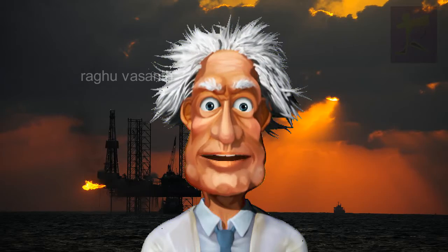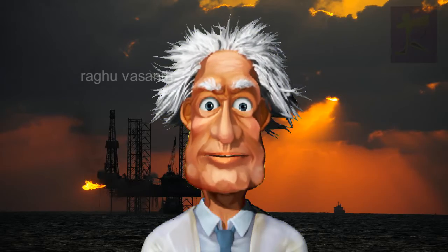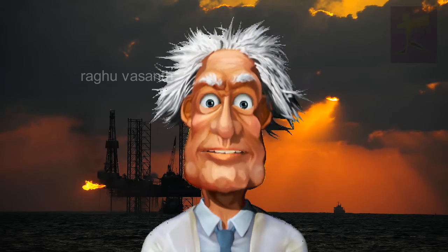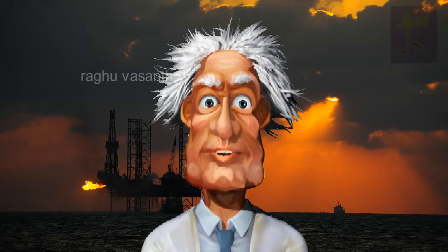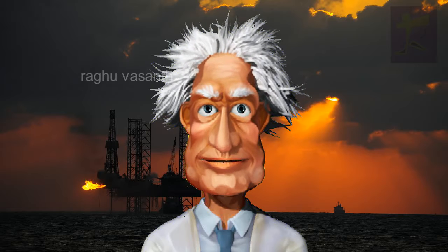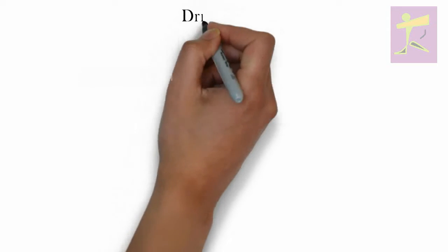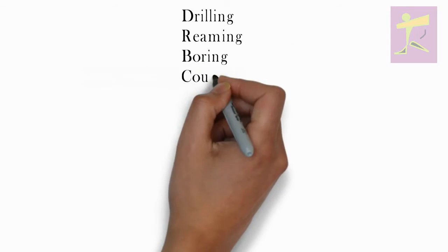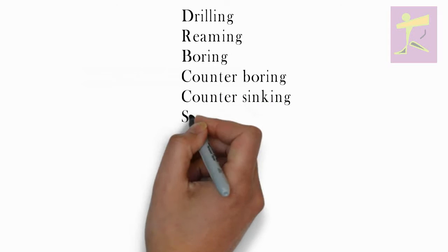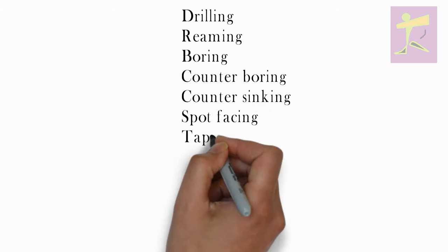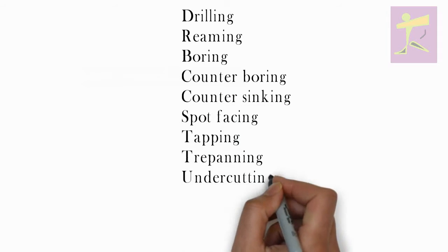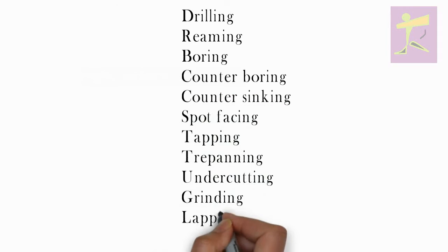Today we are going to discuss about types of drilling. There are 12 types of drilling operations: Drilling, Reaming, Boring, Counter Boring, Counter Sinking, Spot Facing, Tapping, Trepanning, Undercutting, Grinding, Lapping, and Honing.